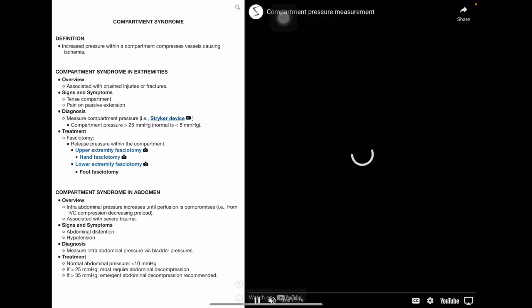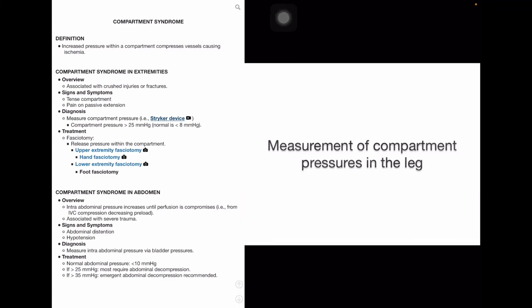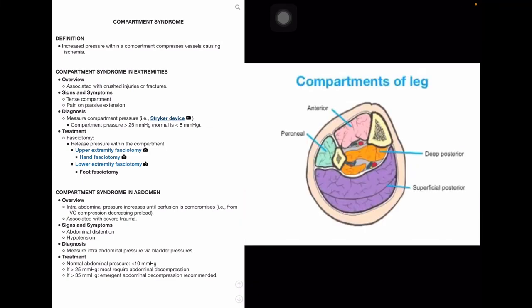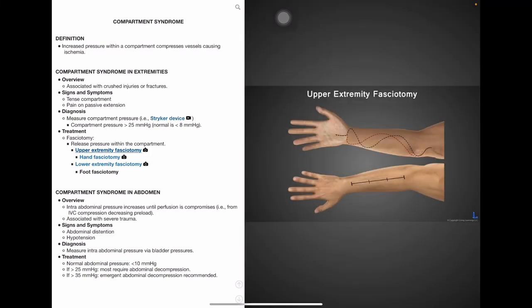We have a video here on the Stryker device for compartment pressure measurement. And we also have pictures here of the upper extremity fasciotomy. It's important to note that the forearm has two compartments, a volar compartment and a dorsal compartment. The volar compartment is accessed through the volar ulnar aspect of the arm. We will make an incision called a volar ulnar incision and this begins around 3 centimeters below the medial epicondyle running through the volar ulnar aspect of the arm ending proximal to the ulnar styloid. The dorsal compartment of the upper extremity is accessed through a dorsal incision around 2 centimeters below the lateral epicondyle and cutting longitudinally to the midline of the dorsum of the wrist.